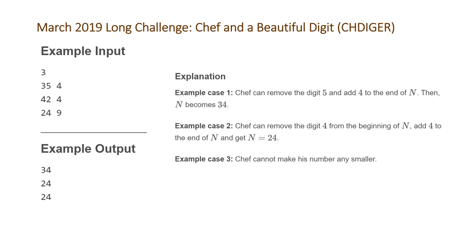This gives us insight into what the problem is asking. Basically, you can remove any digit you want and then append the favorite digit to the end. You can do this as many times as you want, and you want to find the smallest possible value. However, these examples don't really indicate exactly what kind of algorithm we can use.